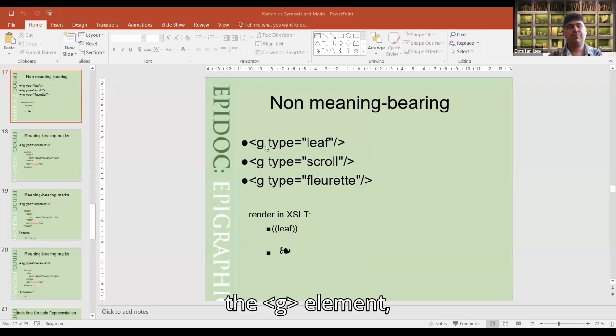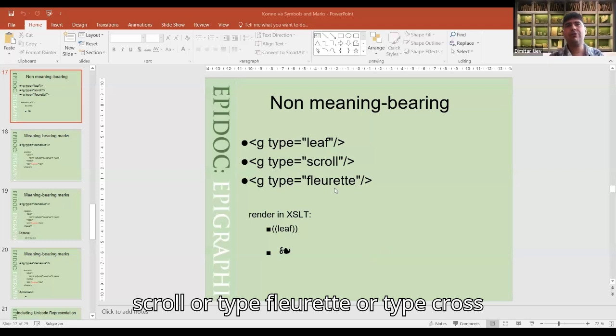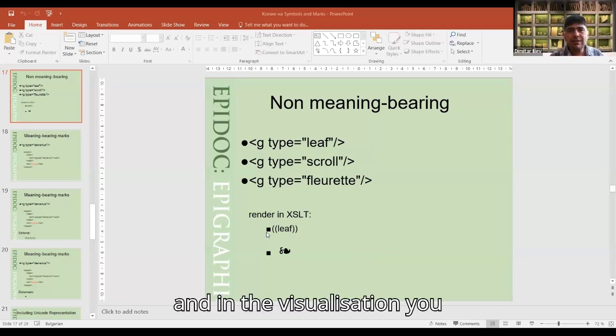You have the g element for symbol and you can have type leaf or type scroll or type floret or type cross, and in the visualization you can have several variants.